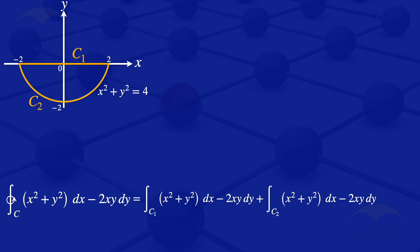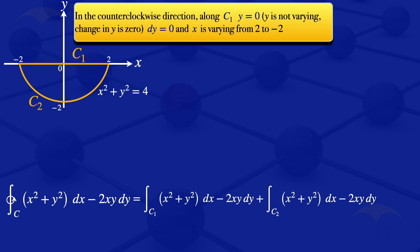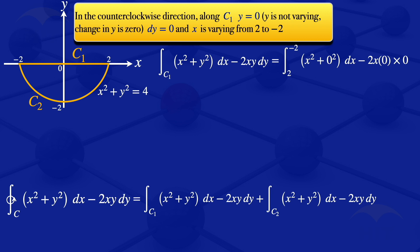Let us evaluate the integral along the curve C1. Along C1, we are moving in the counterclockwise direction. We see that y is 0, therefore dy will be 0, and x is varying from 2 to minus 2. Substituting those values of y equals 0 and dy equals 0, and putting in the limits from 2 to minus 2, we get the integral from 2 to minus 2 of x squared dx.